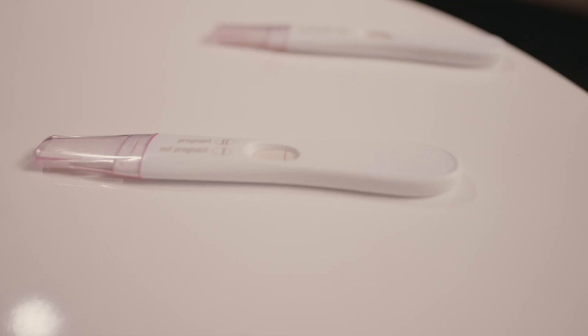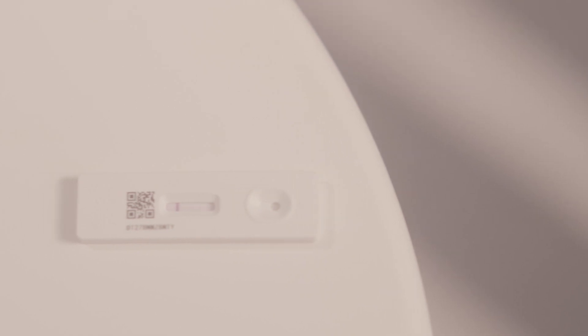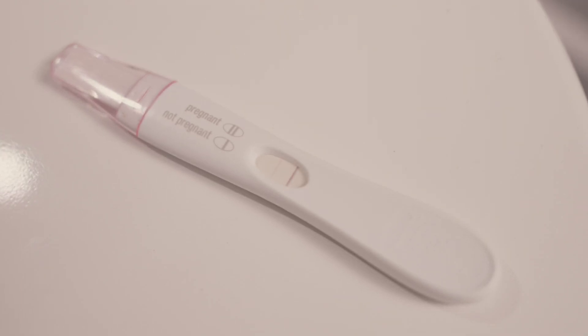Rapid antigen tests, pregnancy tests, use a version of the ELISA to generate a positive or negative test result in the form of visible color changes on a diagnostic strip.